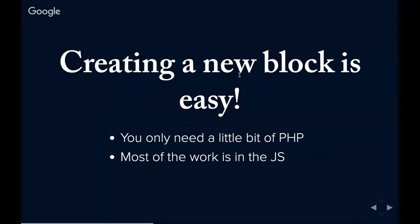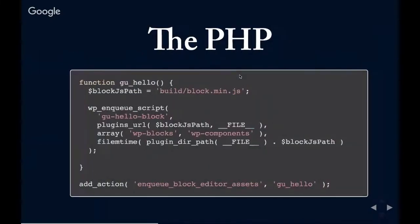Creating a new block is actually pretty simple. You need to know a little bit of PHP, but most of the work — because this is a React application — is handled in JavaScript. If I were to create a very basic custom Gutenberg block, this is all the PHP I would need. All this PHP is doing is adding the JavaScript you're going to write to the WordPress environment — using the regular wp_enqueue_script, grabbing my JavaScript file, and declaring a couple of dependencies. WP blocks and WP components are actually Gutenberg packages. That's it. All the PHP is doing is enqueuing our JavaScript.